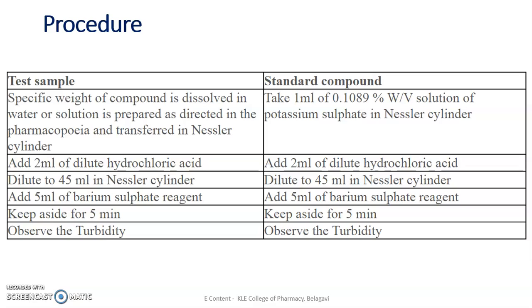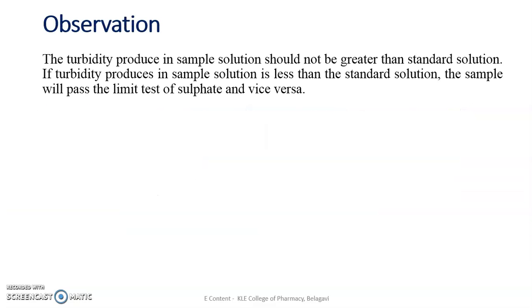The next procedure is the same for both standard and test: add 2 ml of dilute hydrochloric acid, then make up the volume to 45 ml by adding distilled water, then add 5 ml of barium sulphate reagent. After adding the barium sulphate reagent, it will react with the sulphate ions present in both the standard and test. Keep aside for 5 minutes, then compare the test with the standard.